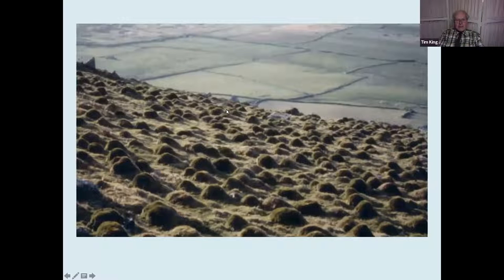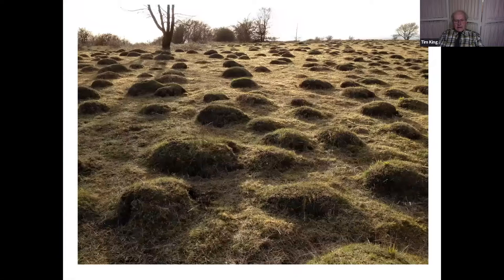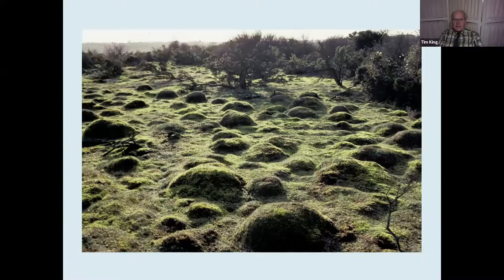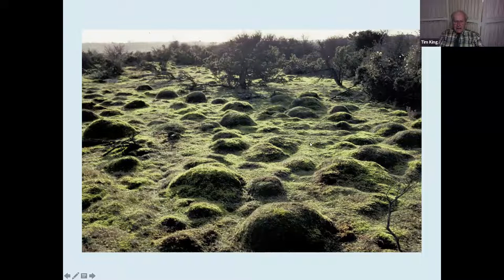Here are some good examples of anthill populations: Rhossili down in the Gower, Beacon Hill at Aston Rowant National Nature Reserve, and Blake's Firs at Porton Ranges. Porton Ranges is the best anthill site in Britain — seven square miles with three million anthills. Owned by the Ministry of Defence, it's not open to the general public. It has lovely short grassland where the anthills occupy sites produced at different times in the past.